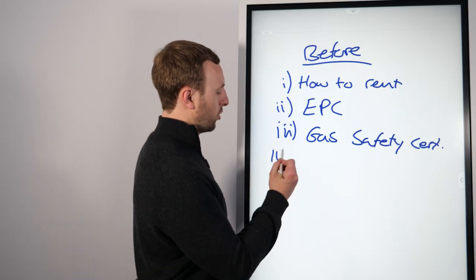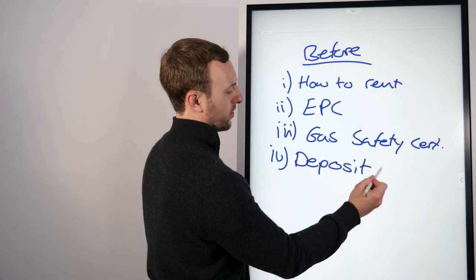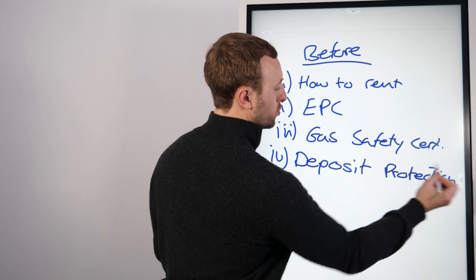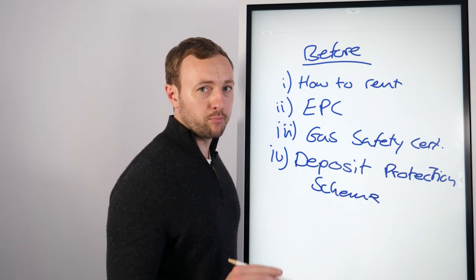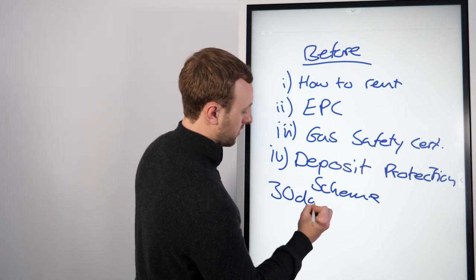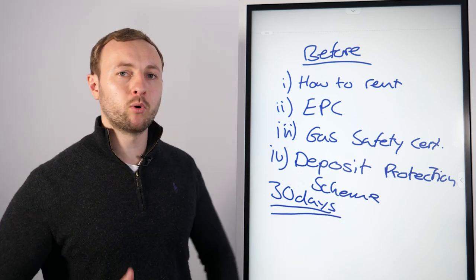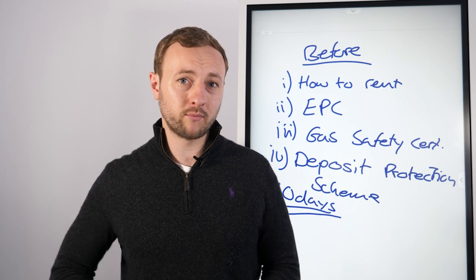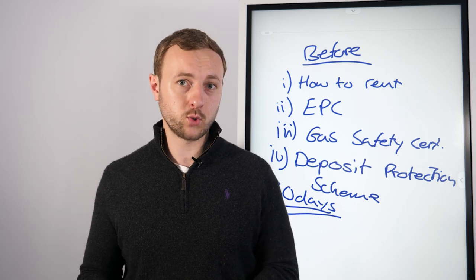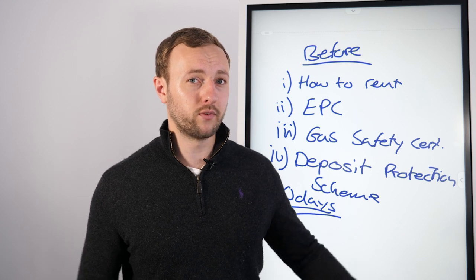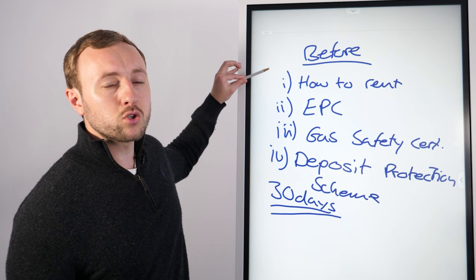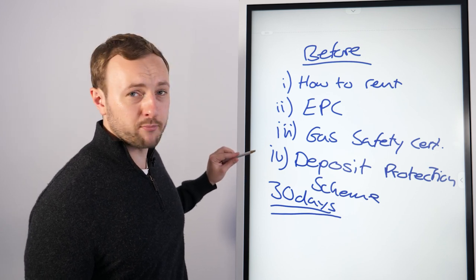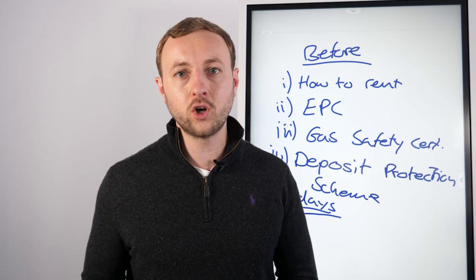Finally, deposits. When you take a deposit on your property, you cannot keep that money in your bank account — you have to put it into a deposit protection scheme. You have 30 days from lodging it to give the tenant paperwork confirming this, otherwise you can get sued for a multiple of the deposit amount. Most tenants don't know that, but they will if you ever try to evict them, because charities will tell them. So: How to Rent guide, EPC, gas safety certificate, and deposit protection scheme with proof sent within 30 days.